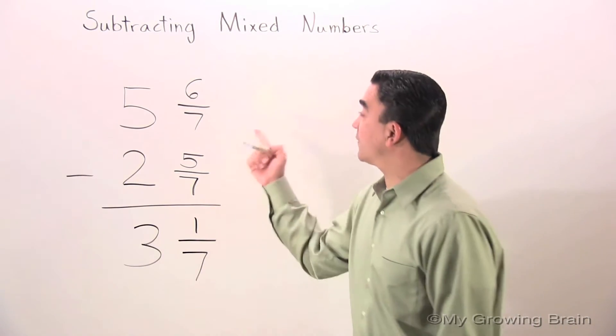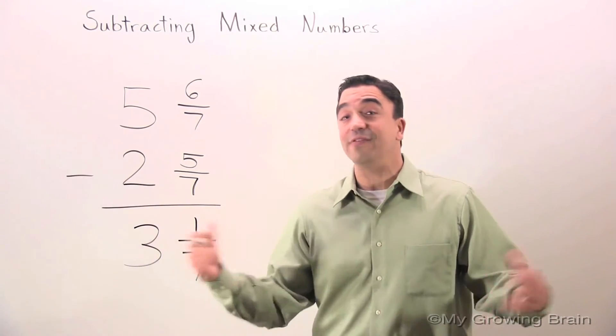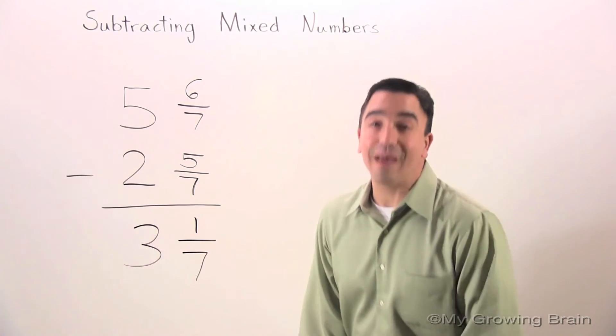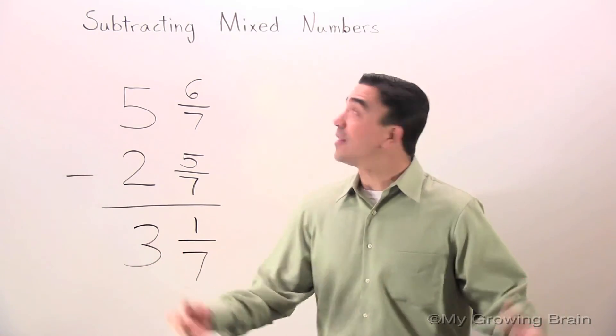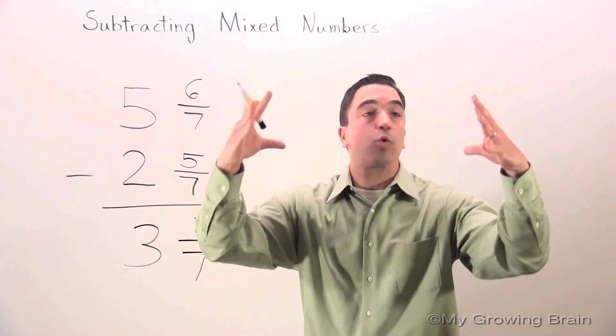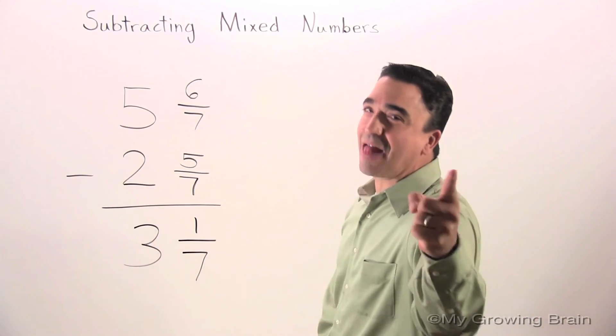5 and 6 sevenths minus 2 and 5 sevenths gives us an answer of 3 and 1 sevenths. That concludes our lesson on subtracting mixed numbers. Coach Mike at My Growing Brain Challenge Yourself.